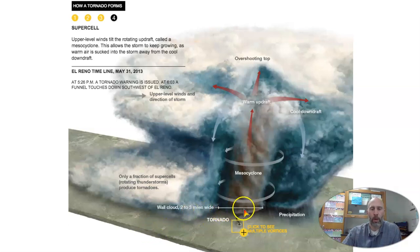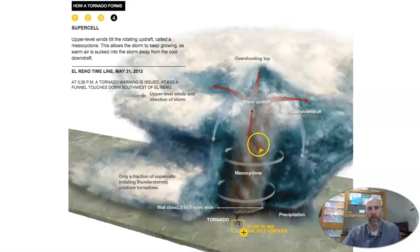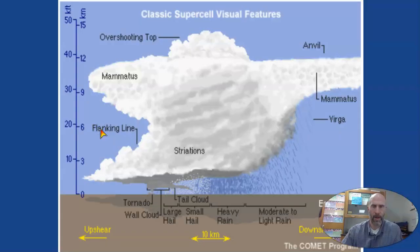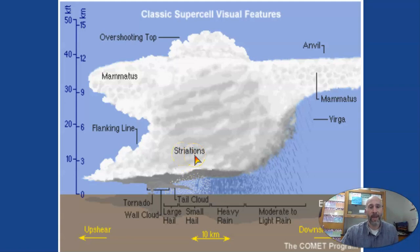You've got the wall cloud down at the bottom — that's the area where you've got the updraft. Warm air is coming up and the cool downdraft is coming around the side. This is a picture showing the profile of a supercell thunderstorm that can lead to the formation of a tornado.